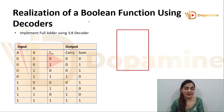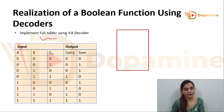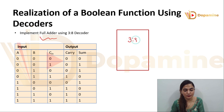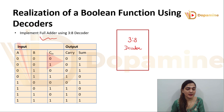Now coming to a very important topic: the realization of a Boolean function using the decoder. The Boolean function we are going to realize is the full adder, using the 3-to-8 decoder. In the full adder we have 3 inputs — a, b and carry-in c — and two outputs: carry-out and sum.